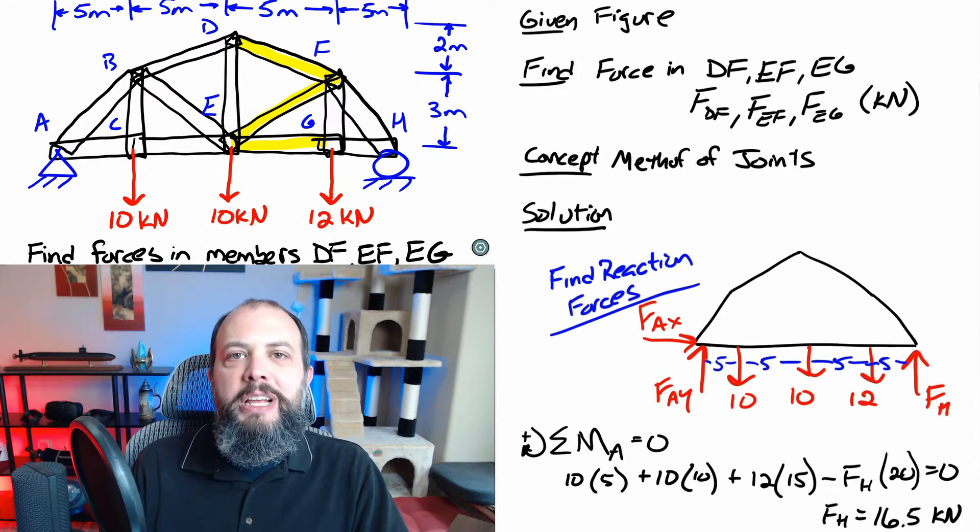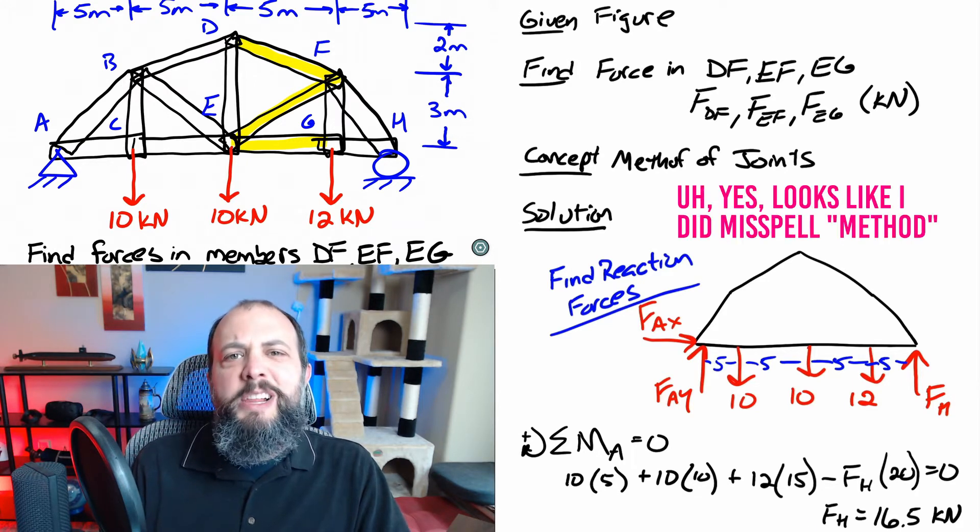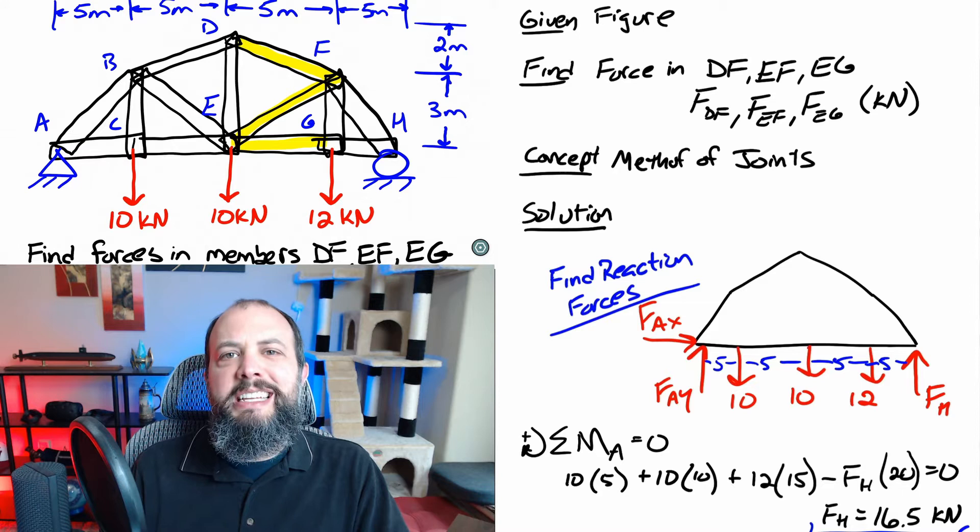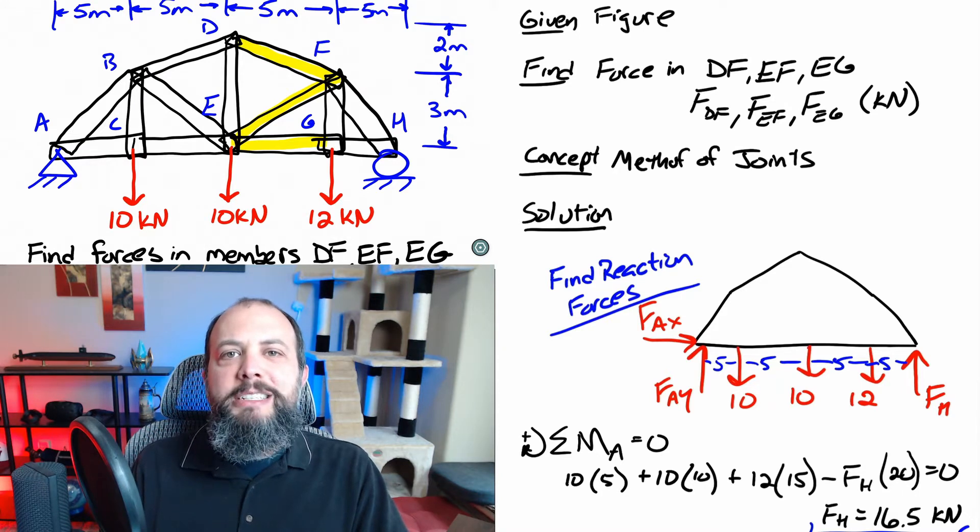For this you ignore all the triangles inside the truss and just draw the outer shape along with all of the external forces and all of the support reactions. Since I'm planning ahead and knowing that I'm going to be working for the right hand side for this problem I only actually need to find FH. There's no need to solve for the reaction forces at A. And that's an important time saving technique. Truss problems can get really big. You need to plan ahead so that you solve for as few unnecessary things as possible.